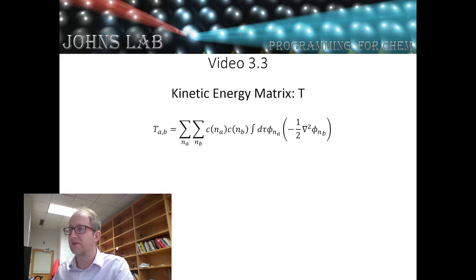Then we take the integral over all space of a primitive Gaussian function. For now, this is just an s orbital or spherically symmetric Gaussian times a kinetic energy operator, which is minus one half del squared in atomic units, times another primitive spherically symmetric Gaussian function.